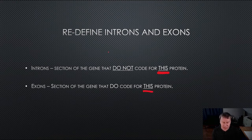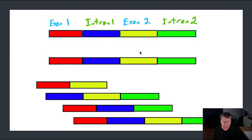So let's take a look and see how this works. So I have a gene here. And we're looking at the top one right now. And on this gene, we have exon 1, intron 1, exon 2, intron 2. And they're color coded.